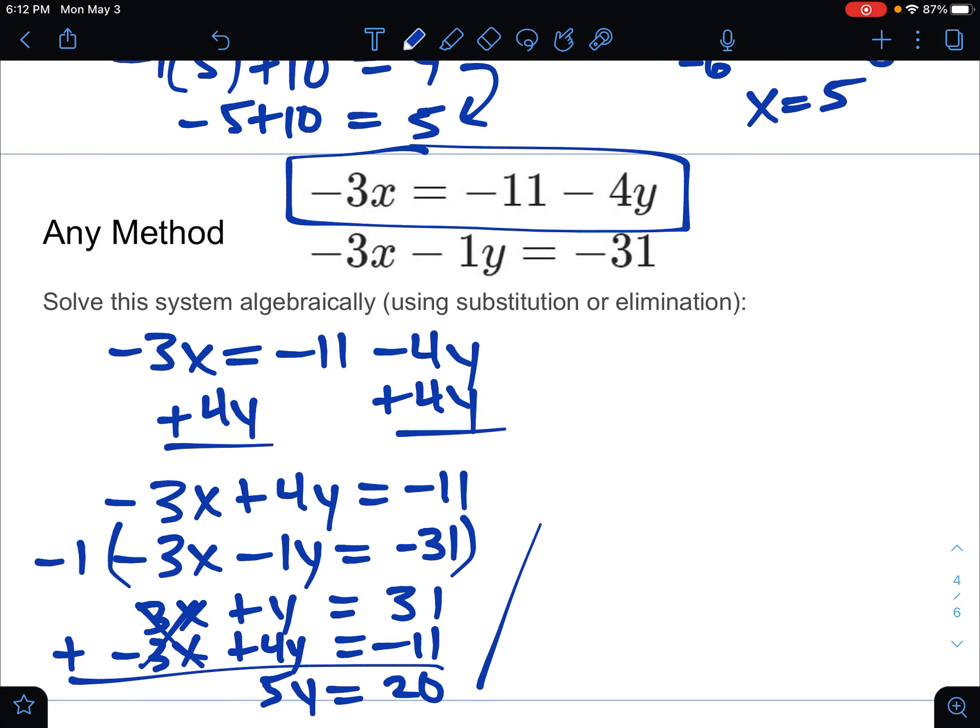So if 5y is 20, then y is, divided by 5, 4.